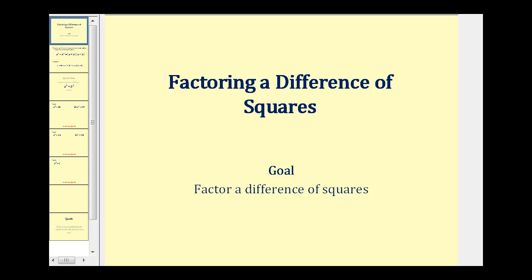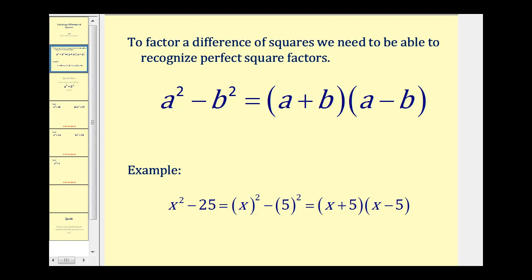Welcome to a video on how to factor a difference of squares. To factor a difference of squares, we need to be able to recognize perfect square factors. If we have a binomial where the first term is a perfect square, the second term is a perfect square, and we have a difference, it will factor into the quantity a plus b times the quantity a minus b.